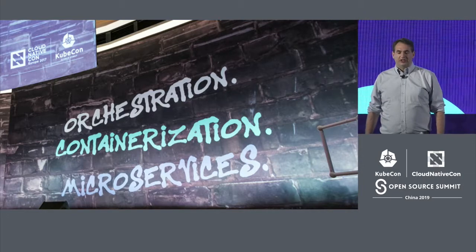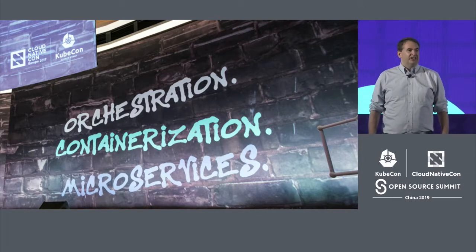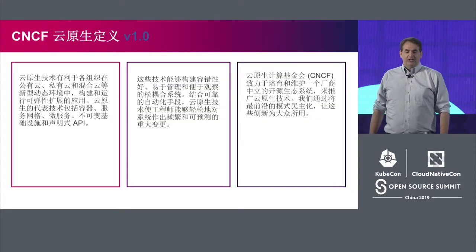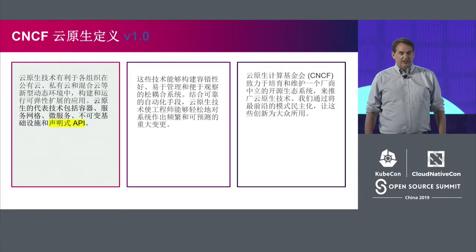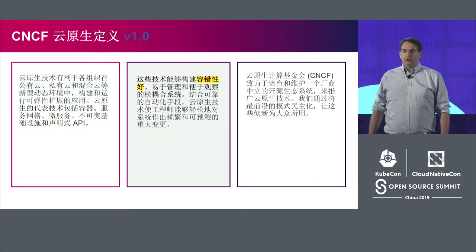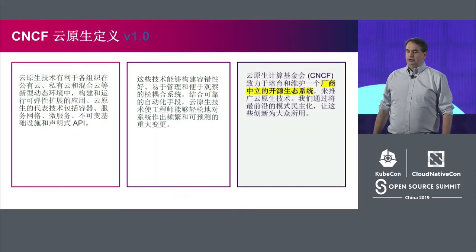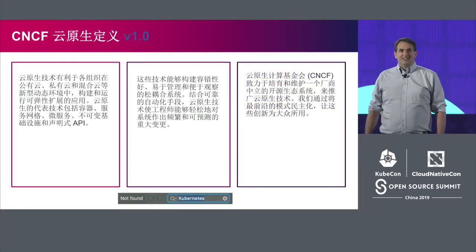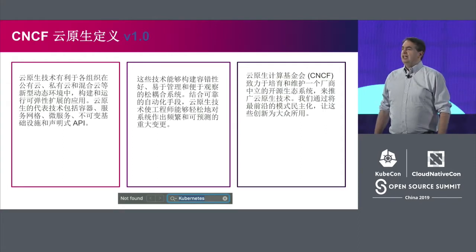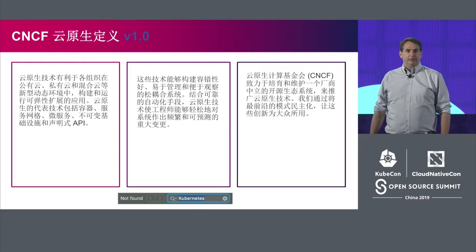Last year, our technical oversight committee came up with a much more expansive characterization: the CNCF cloud native definition version 1.0. It includes ideas like declarative APIs, resiliency, observability, and an ecosystem of open source, vendor-neutral projects. One word that's not included in the definition is Kubernetes. That's because Kubernetes is a leading cloud native implementation, but certainly not the only one.